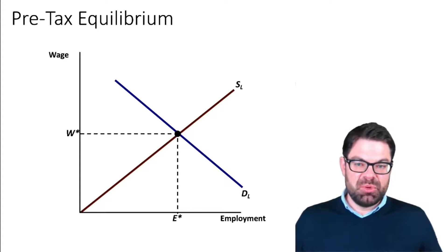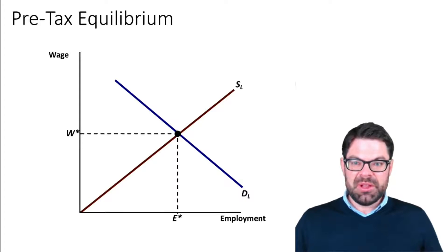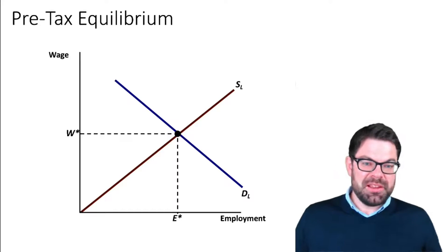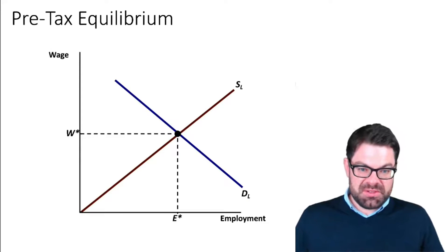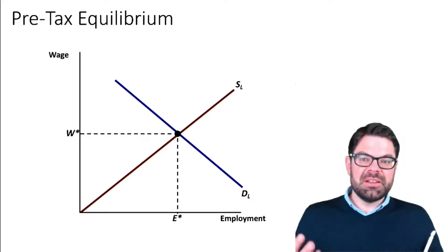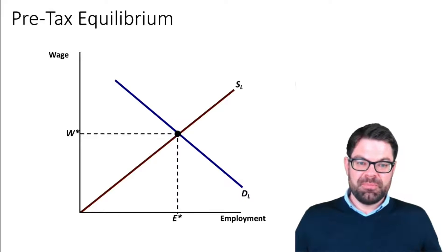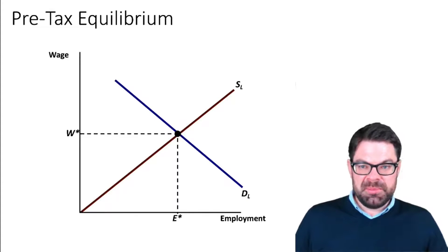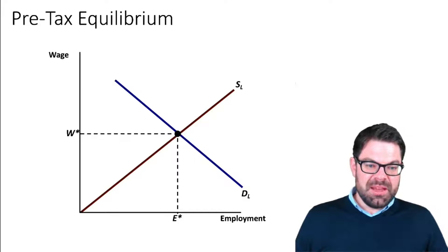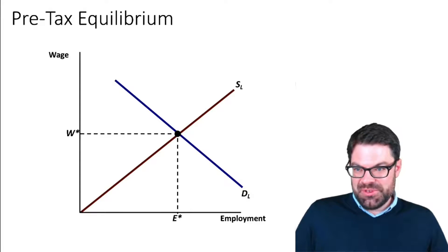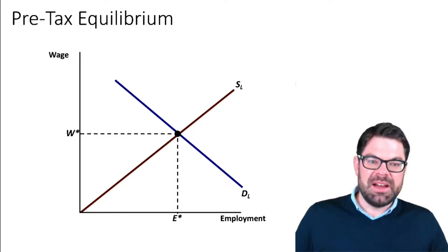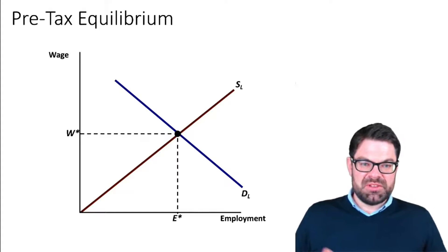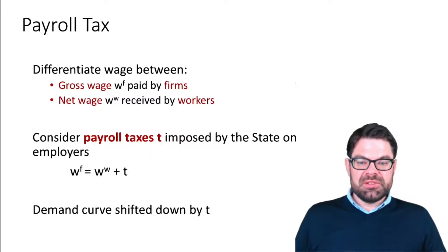This is the pre-tax equilibrium. The quantity on the horizontal axis is employment — or hours of work — and the price is the wage. We have an upward-sloping supply curve summarizing worker behavior: for a higher wage, more people would work. We have a downward-sloping labor demand curve: the lower the wage, the cheaper it is for firms to hire, so they hire more. Equilibrium is where demand and supply cross.